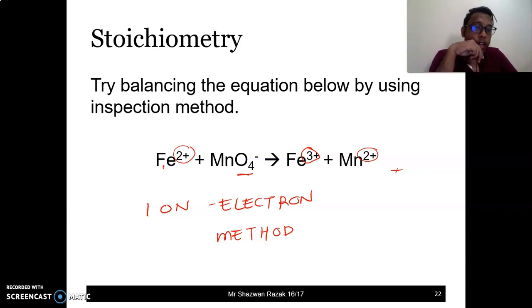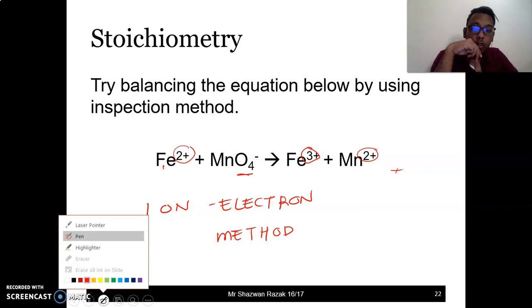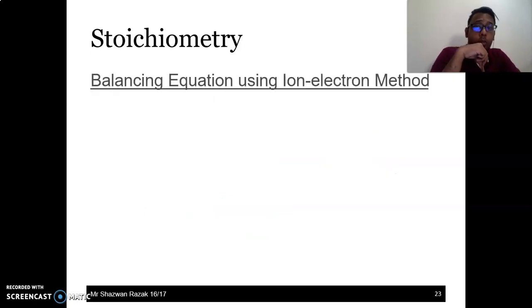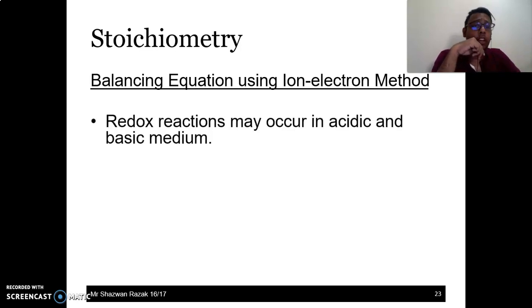In the last video, we know that this type of equation is almost unbalanceable by using the inspection method. So what we should do now is, we will look at how to balance it by using the ion-electron method. What you have to know is, in order to balance by ion-electron method, it is for redox equations. And this redox equation can be in the form of acidic medium or basic medium.